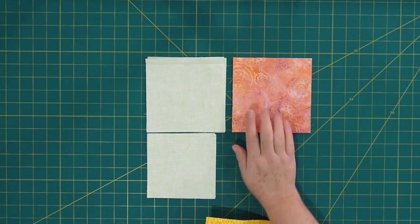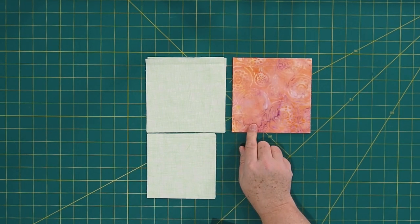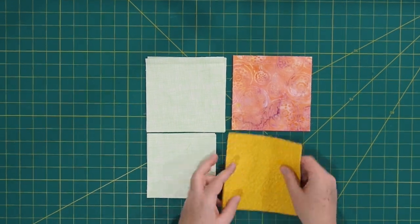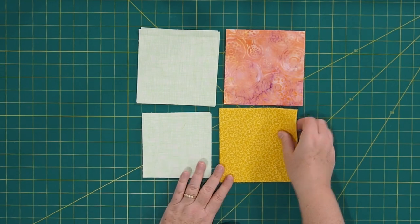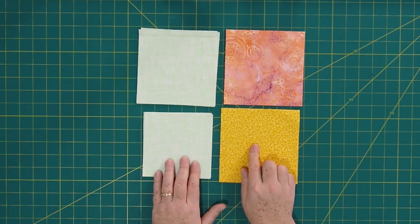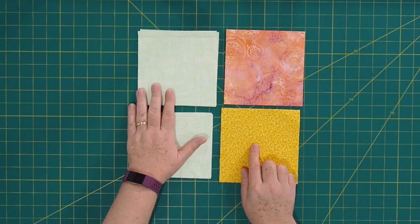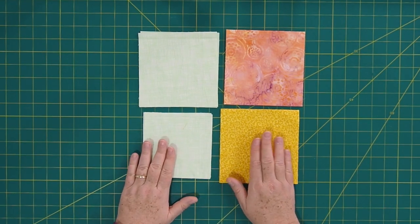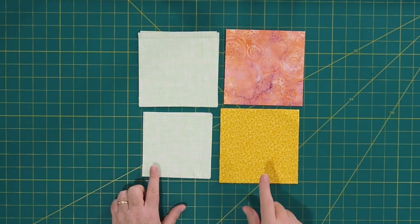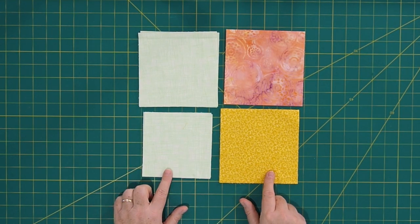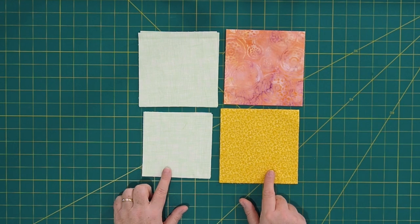From fabric A, which is this coral, you need four squares cut five and three quarter inches. And lastly, from fabric B, which is this yellow, bright yellow, you need four squares cut five and three quarters inches. That is it. This is really simple. The only thing that takes a lot of time is sewing all those half-square triangles together.